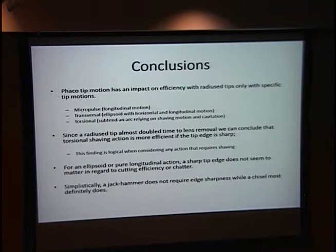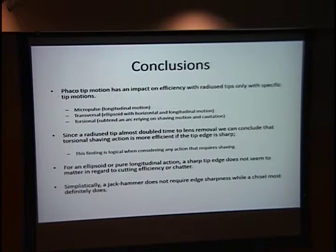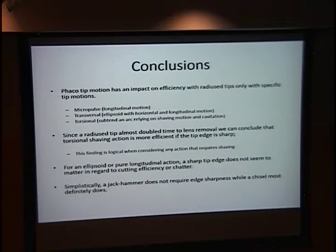Some conclusions from this study: phaco tip motion must have an impact with radius tips. Micropulse is a longitudinal motion — essentially a jackhammering, a straightforward motion. Transversal is an ellipsoidal motion with both horizontal and longitudinal movement. And torsional is a subtenant arc — kind of a shaving or chisel motion. Since the radius tip removal time almost doubled in the torsional model, we think the sharpness of the tip must have some effect on a chisel motion. A sharper chisel is probably more efficient, whereas the jackhammer effect relies on pure power and doesn't really need edge sharpness.